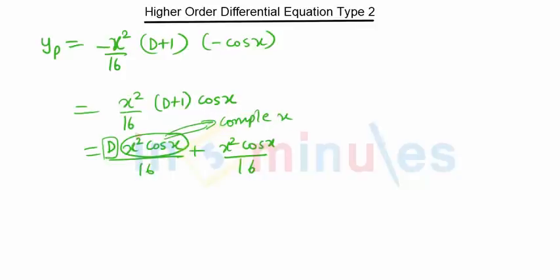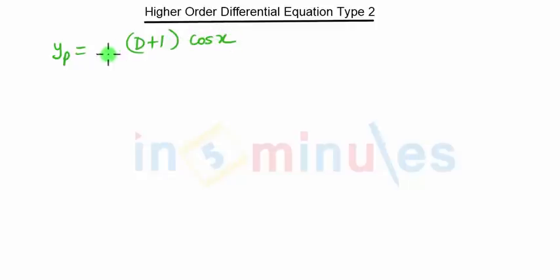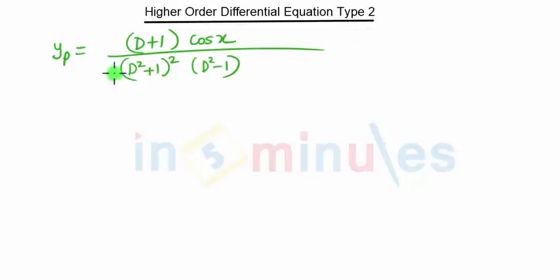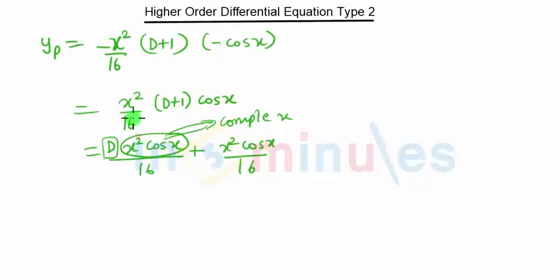Taking the derivative of x² cos x involves the product rule (u·v rule), which becomes complex. So for this case, looking at (d + 1)·cos x, we go back to yp = (d + 1)·cos x upon (d² + 1)² times (d² - 1). Before applying the Type 2 formula, we first simplify the numerator by distributing: d·cos x plus cos x, upon (d² + 1)²·(d² - 1). The rule is: when d is in the numerator, first take the derivative and then apply the Type 2 formula.